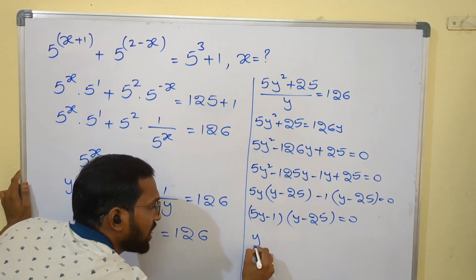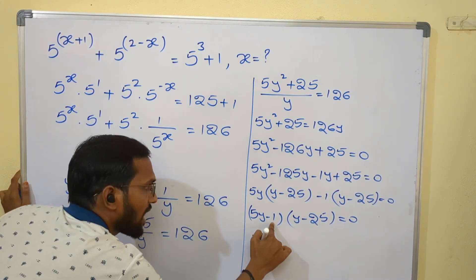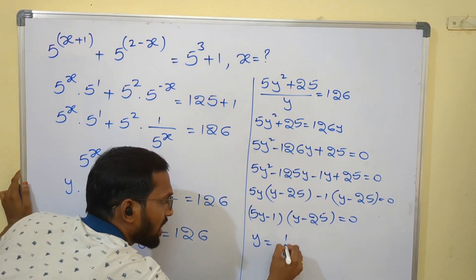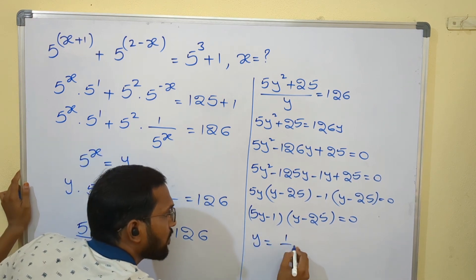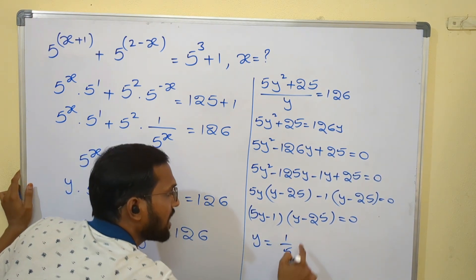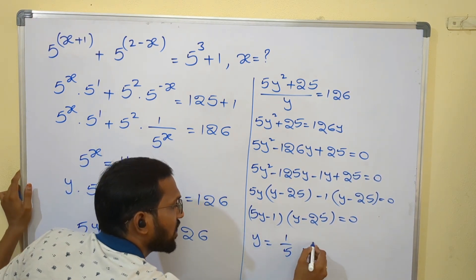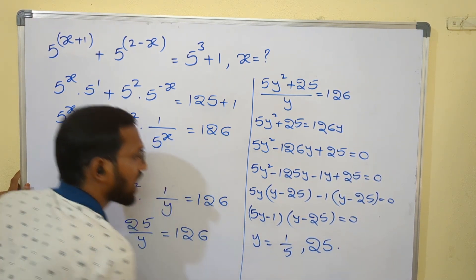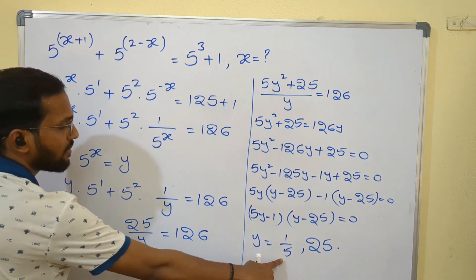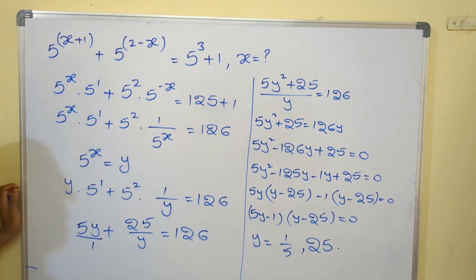We need to find the y values. From 5y - 1 = 0, we get y = 1/5. From y - 25 = 0, we get y = 25. So the y values are either 1/5 or 25.